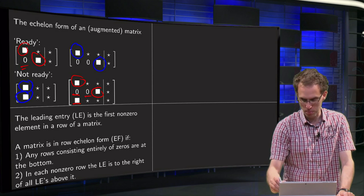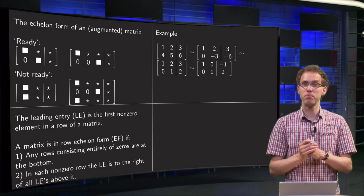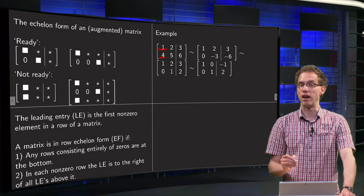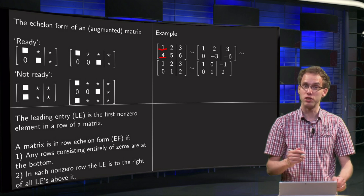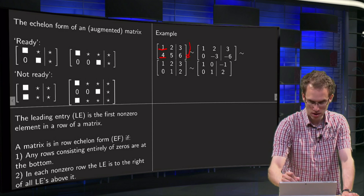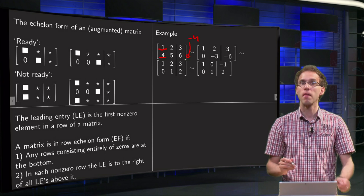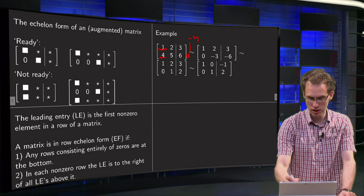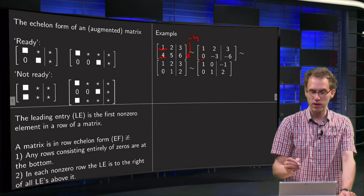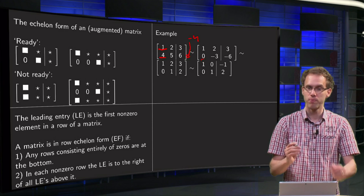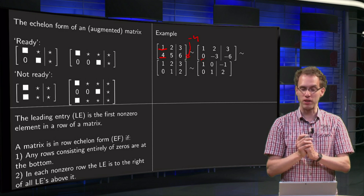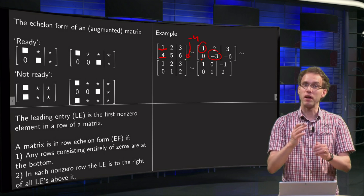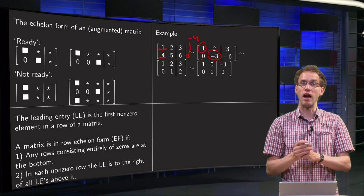Let's do that in an explicit example. Here we have our augmented matrix: 1, 2, 3 | 4, 5, 6. The leading entries are the 1 and the 4 at this moment; they are not to the right of each other, so the matrix is not in echelon form. So we do a row reduction step — subtract 4 times the first row from the second row. We get: 1, 2, 3 in the first row. Then minus 4 times 1 plus 4 equals 0; minus 8 plus 5 equals minus 3; minus 12 plus 6 equals minus 6. So the new second row is 0, minus 3, minus 6. Now the leading entries are the 1 and the minus 3, and minus 3 is to the right, which means our matrix is now in echelon form.